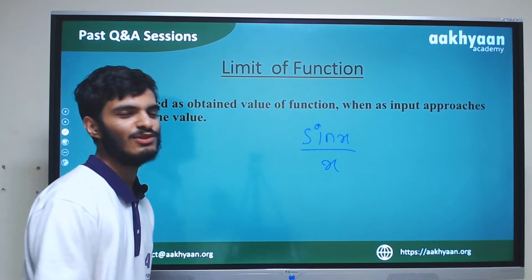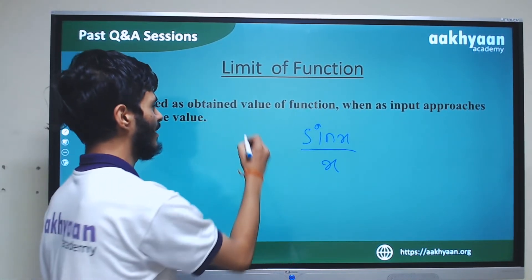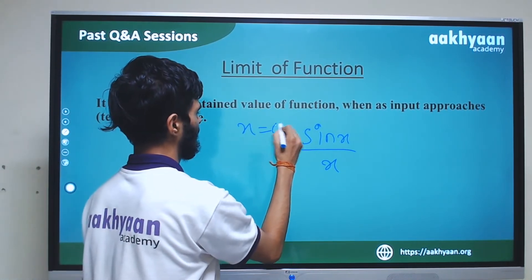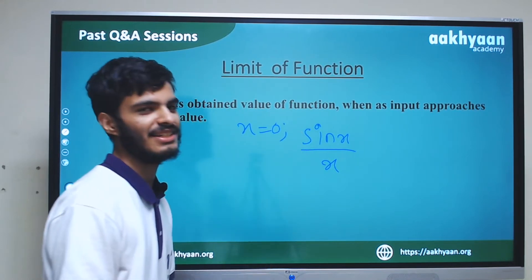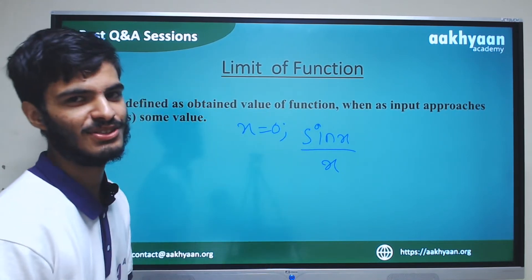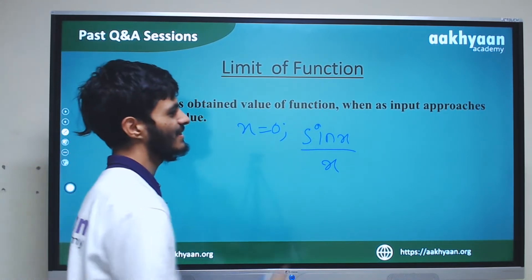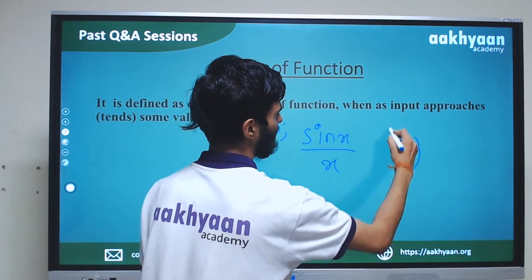If you substitute the value of x as 0, then you will get sin 0 by 0, which gives you an indeterminate form. This is why limits are needed.